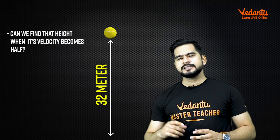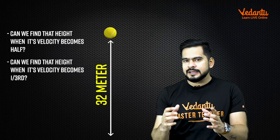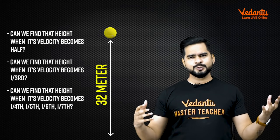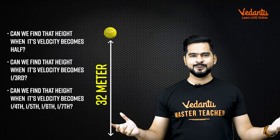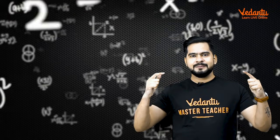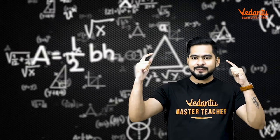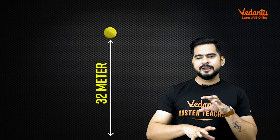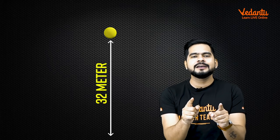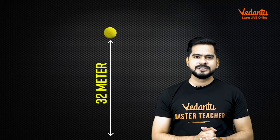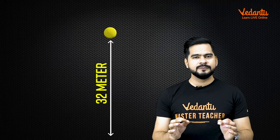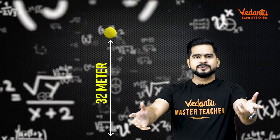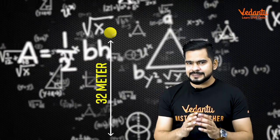Baccha party, if I throw this ball up and it covers a maximum height of 32 meters, can we find the height when its velocity becomes half? Or when its velocity becomes one third? Or one fourth, one fifth, one sixth, one seventh — anything? Stop the video and think. You would need to use kinematic equations, but it will take time. So what is the difference between you and the rest? You are all true Vedans, baccha party. Listen carefully — you would be using the kinematic equation 2ad = v² − u². Now I am going to tell you the super amazing trick.